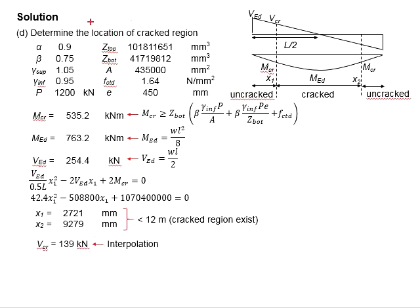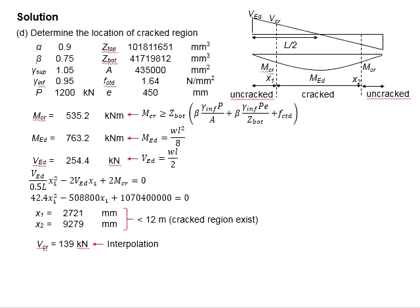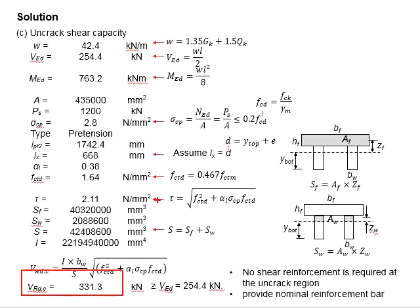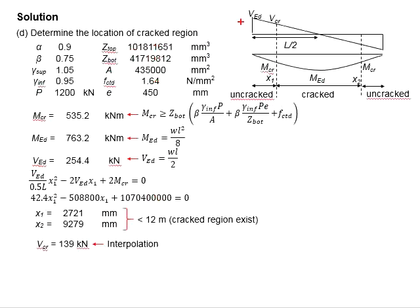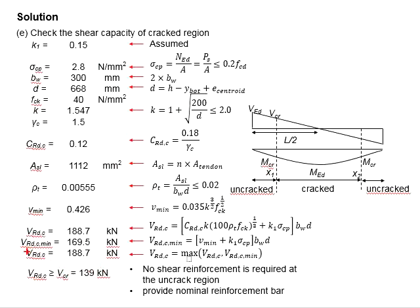Next, let us proceed to determine the locations of the crack region. The purpose of this step is for us to determine the VCR, which is later to be checked against the shear capacity of the crack region. The VRDC calculated in the previous step is meant to check against the crack regions against the VED. We will need to determine if there is any crack region, and this crack region load, which is VCR, will be checked against VRDC for the crack region.